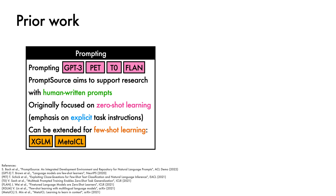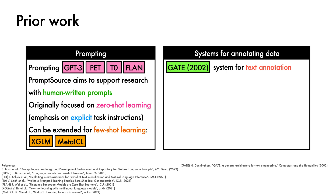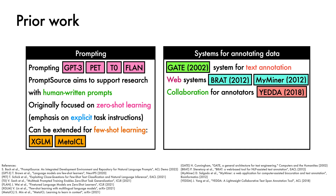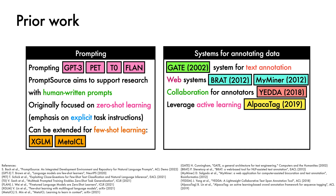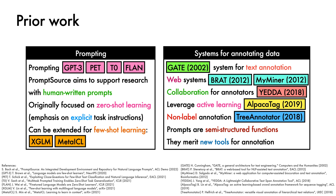PromptSource is also related to previous systems for annotating data. Examples include GATE, a system developed 20 years ago for labelling text with many kinds of annotations. There have since been many web-based systems like BRAT for structural annotations and MyMiner for bioinformatics text labelling, as well as works focused on collaboration between annotators such as YEDA. There have been annotation tools that leverage active learning, like ALPACA-TAC, which is particularly feasible when annotation is performed on a per-example basis. Prior work has also considered non-label annotation, such as TreeAnnotator for tree-like structures. Prompts, which are semi-structured functions, differ substantially from such annotation, and thus merit new tools — a need that PromptSource aims to meet.